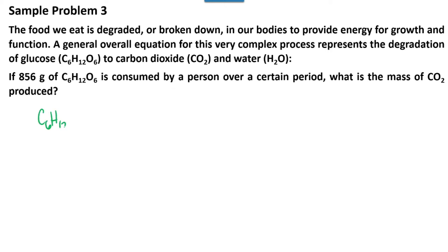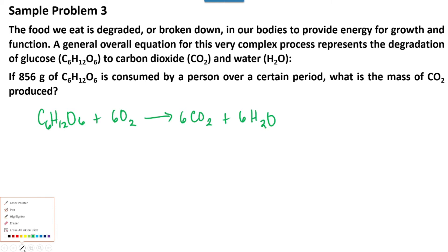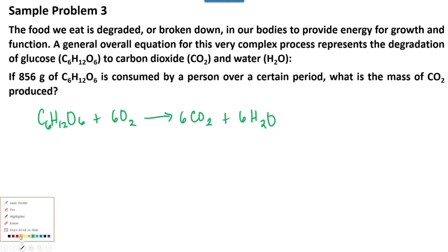The chemical equation for this problem is: C6H12O6 + 6O2 yields 6CO2 + 6H2O. This is the balanced equation for this problem. We need to calculate the mass of carbon dioxide produced. Since it's in mass, we are working in grams, so this is an example of a mass-to-mass stoichiometry problem.